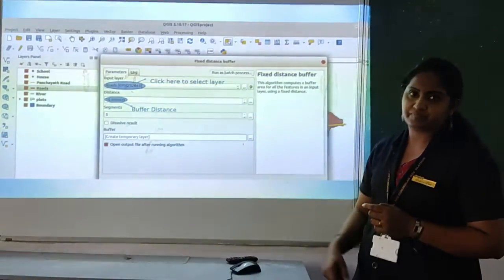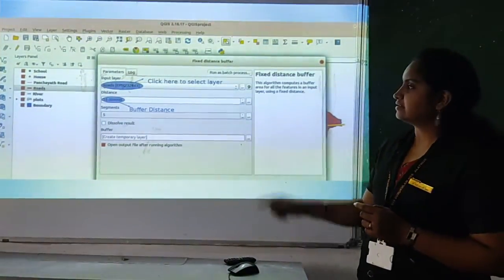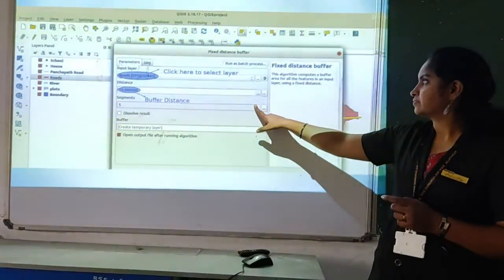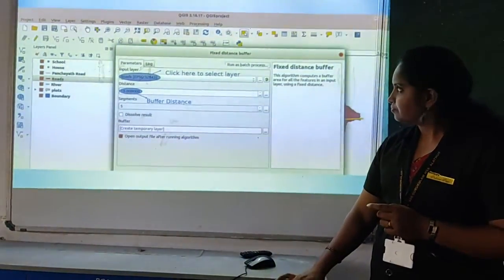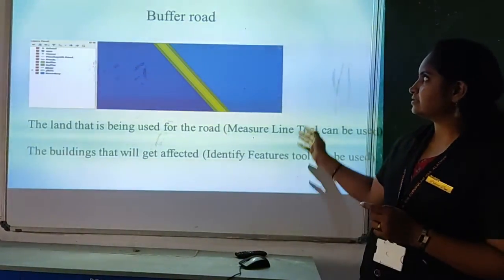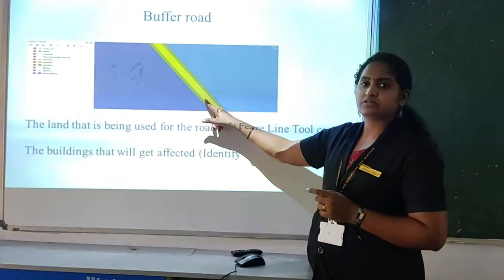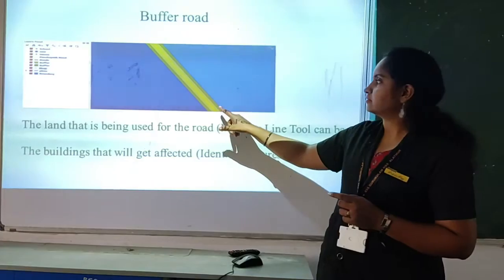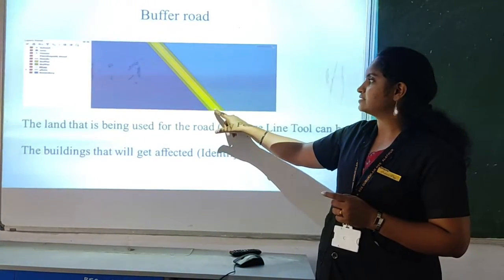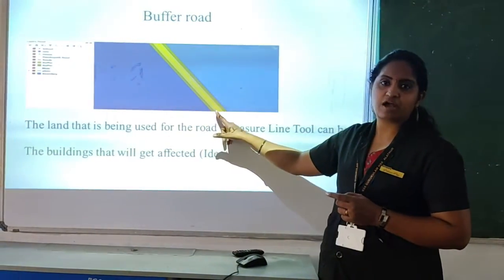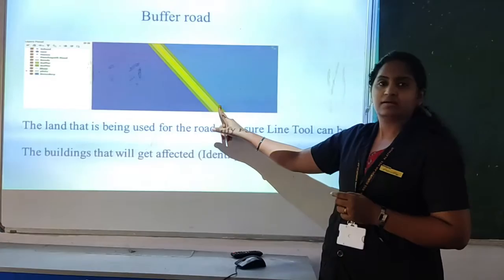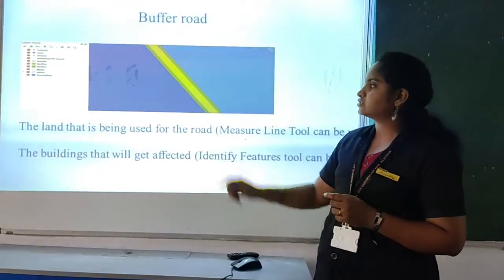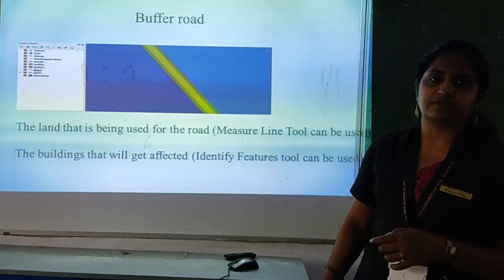The input layer is which layer you have to increase the width of, and you specify the distance — that is the buffer distance. If the road itself is displayed in the map as a line, after buffering the road its width will be increased. Like this, you can see your layer after buffering.